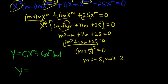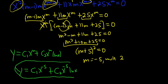So y is equal to c1x to the negative 5 plus c2x to the negative 5 ln x. And that is the final answer. I hope that made sense.